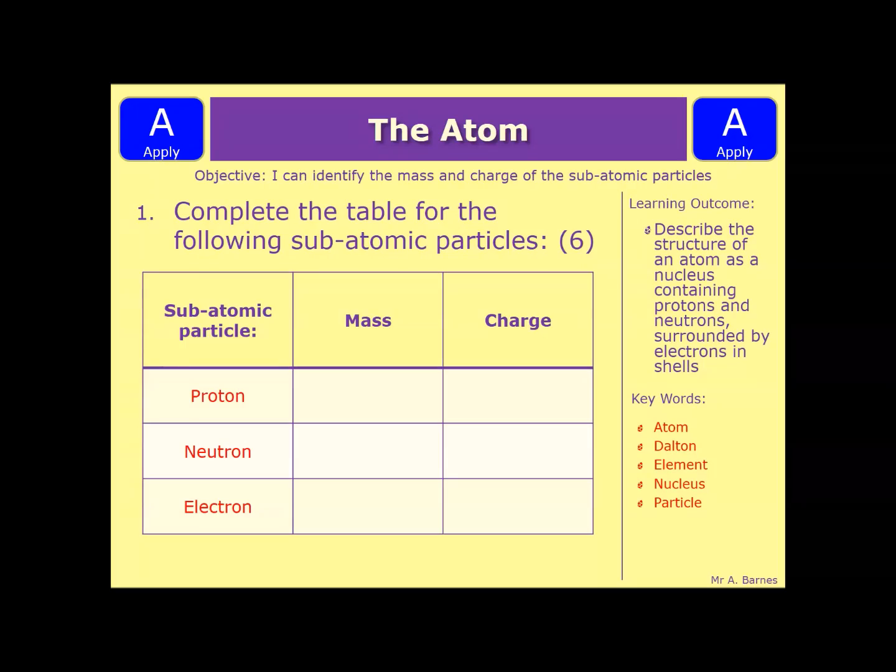Okay, let's have a look at a quick question then for the subatomic particles. What you need to do then is complete the table for the following subatomic particles, including the mass and charge. This is worth 6 marks. It's 1 mark for each of them. Pause the video, have a go at it, and then we'll see how you did.